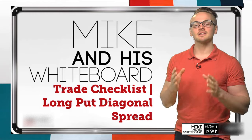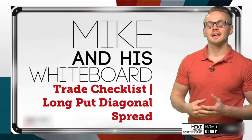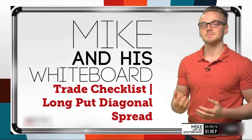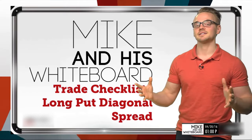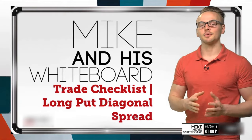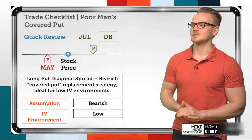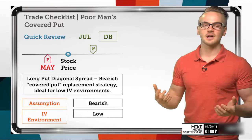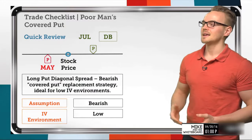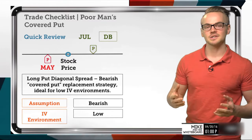We're talking about getting long a put and selling a put against that to reduce our cost basis and create a diagonalized spread. The very first thing we need to know when we're talking about a poor man's covered put or a long put diagonal spread is that we're dealing with two different options in two different expiration cycles.